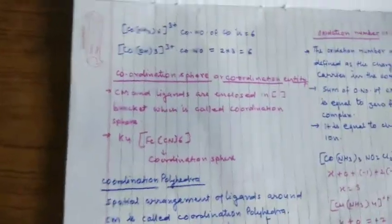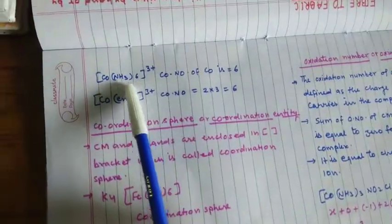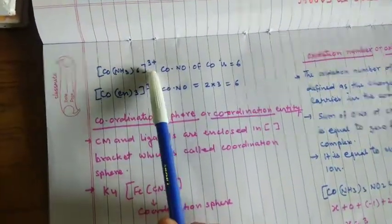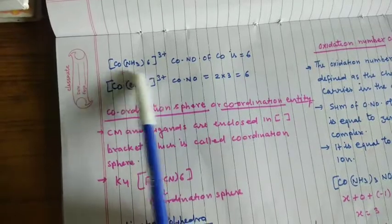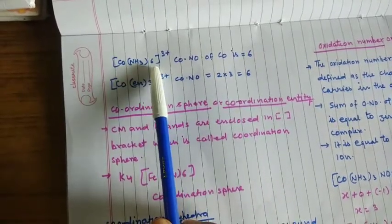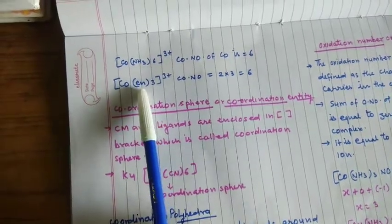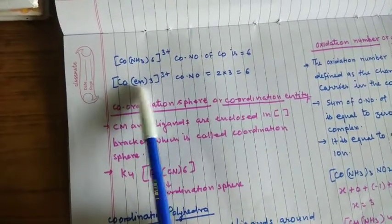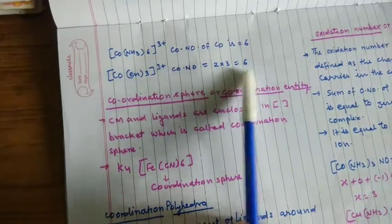जैसे यहाँ एक example दिया हुआ है कि hexamine cobalt third ion में cobalt का coordination number क्या है? Six है क्योंकि ammonia unidentate है, six है तो six हो जायेगा। लेकिन यहाँ पर EN bidentate ligand है तीन है तो two से multiply कीजिये two, three, six हो जायेगा।